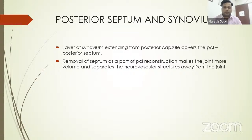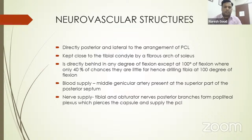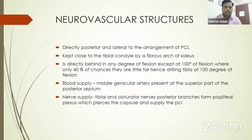The neurovascular structures are directly posterior and lateral to the PCL. Studies have found these posterior neurovascular structures are only 2 mm away from the posterior tibial condyle at any degree of flexion, except at 100 degrees of flexion where, in 40 percent of cases, they are approximately 10 mm away. Therefore, tibial drilling should always be done at 100 degrees of flexion. The PCL blood supply is provided by the middle genicular artery, and nerve supply is from the tibial and obturator nerves, which form a plexus entering through the septum.